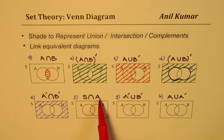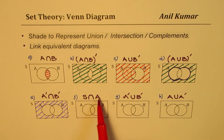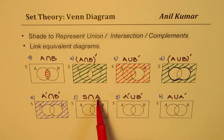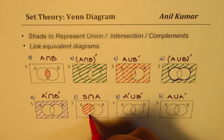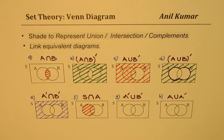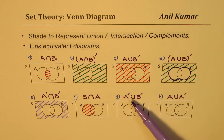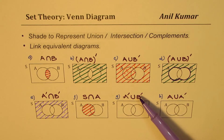Now we want the intersection of A with the universal set S, so A∩S. That simply means the set A itself. So we shade the set A.